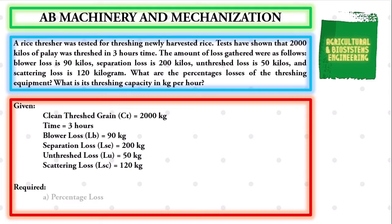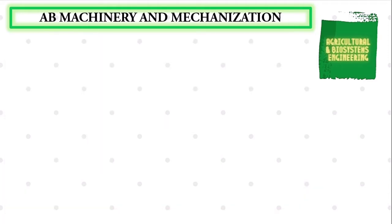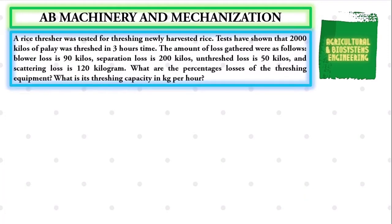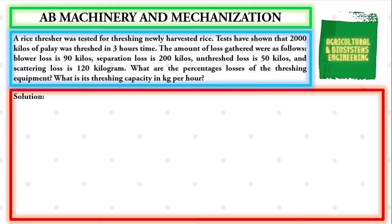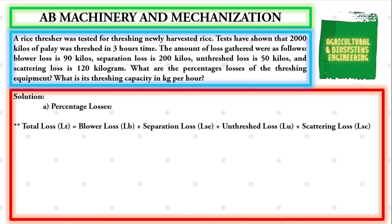The required values in the problem are the percentage loss and the capacity in kilograms per hour. After identifying the given and the required, we proceed with our solution. The first value we are going to solve is the percentage losses, and to do that we must first solve for the total loss.